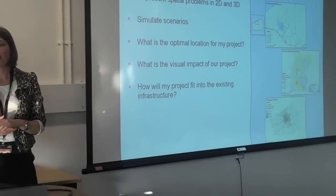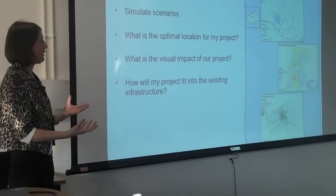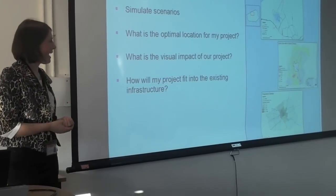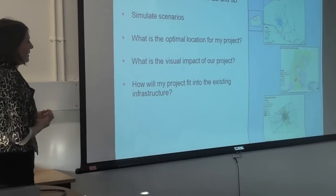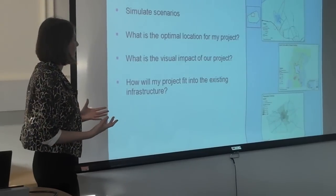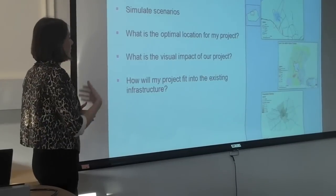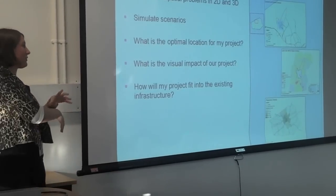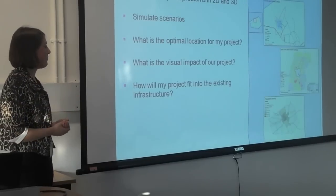If you have your series of criteria and the data that relates to those criteria, you can bring it into the GIS and then weight it to deliver that analysis and work out the optimal location based on the criteria you have. Another key use is assessing the visual impact of your project — particularly useful when designing wind farms. If you have a 3D terrain model of the area where you intend to put your wind farm and some models of your turbines, you can run a viewshed analysis to see what the visual impact will be on surrounding developments.